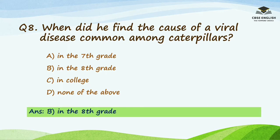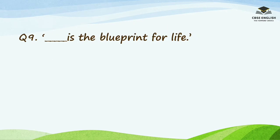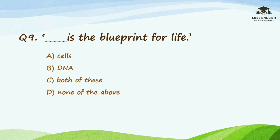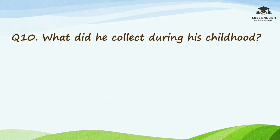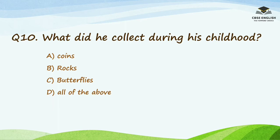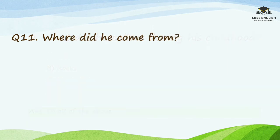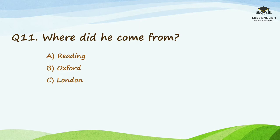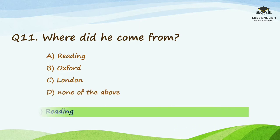Question number nine: blank is the blueprint for life. Options are cells, DNA, both of these, or none of the above. The right answer is DNA. Question number ten: what did he collect during his childhood? Options are coins, rocks, butterflies, or all of the above. The right answer is all of the above. Question number eleven: where did he come from? Options are Reading, Oxford, London, or none of the above. The right answer is Reading.